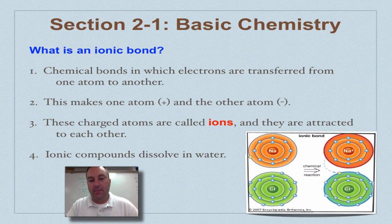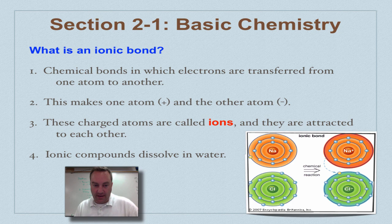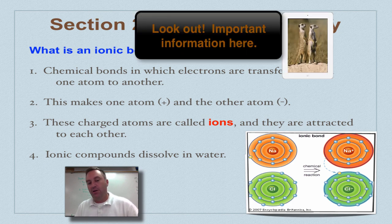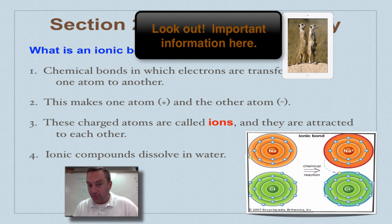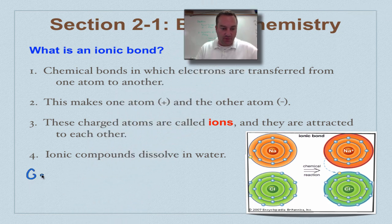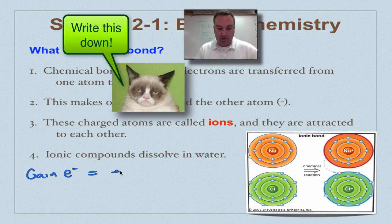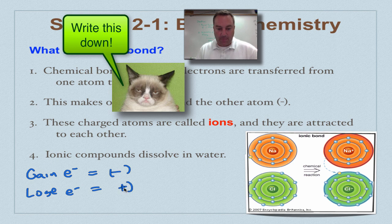What is an ionic bond? An ionic bond is when electrons are transferred from one atom to another. A couple of things I want you to understand is that when you gain an electron, you're going to become negative. And when you lose an electron, you're going to become positive.